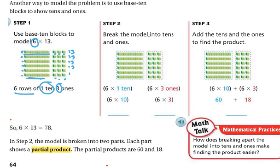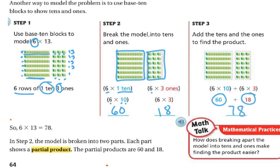So step 2 is to break the model into 10s. So they've already done that. So I'm going to take my 10s. These are all 10s. So I have 6 one tens or 6 times 10 and 6 times 10, we did this yesterday, 6 times 1 is 6, add my 0, that's 60, right? And then in my 1s, I've got 6 rows of 3 ones in each and 6 times 3 is 18. So then you're going to add the 10s and the 1s to find the product. You're going to add the 60 plus the 18 and you're going to get 78. So 6 times 13 is 78.